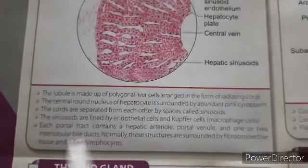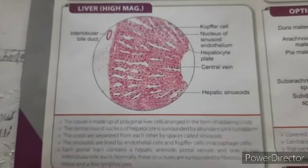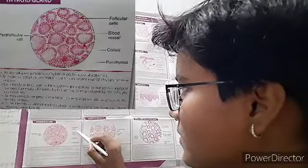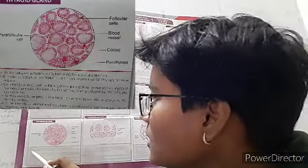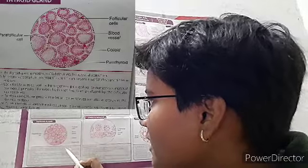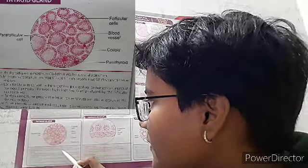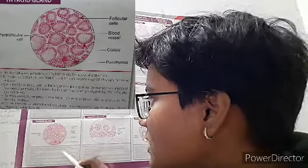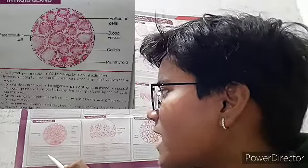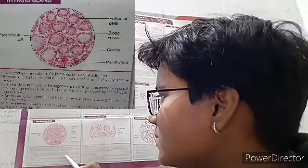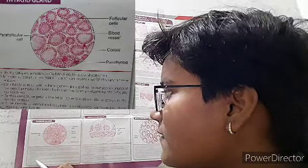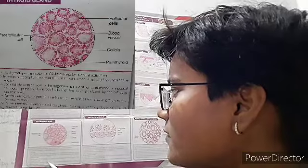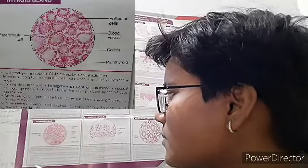Now the thyroid gland. Visible structures include parafollicular cells, follicular cells, blood vessels, colloid, and parathyroid. The thyroid gland is made up of follicles lined by cuboidal epithelium. Follicles vary in shape and size. Each follicle is filled with a homogenous pink colloid — a proteinaceous material composed primarily of thyroglobulin produced by follicular epithelial cells. Parafollicular cells are present in relation to the follicles and are also grouped in connective tissue between the follicles.